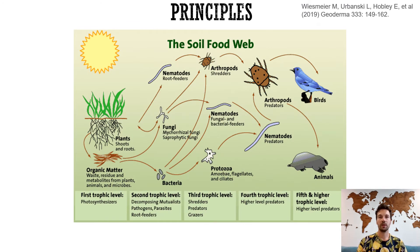Soil microbial biomass plays a dual role in soil organic matter turnover, balancing its mineralization and stabilization processes. It is often referred to as the microbial carbon pump, as microbial residues and exudates may contribute up to 80% of carbon in the stable soil organic matter fraction. In many soil ecosystems, soil nitrogen rather than soil carbon may influence the immobilization of organic matter by the microbial biomass, which explains why nitrogen-fixing plants can positively influence nitrogen content in soil.